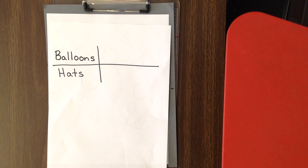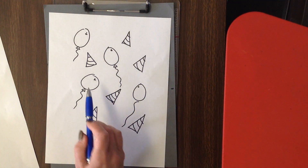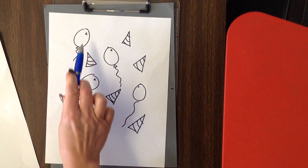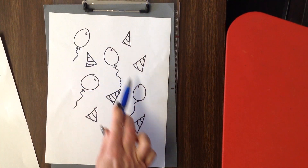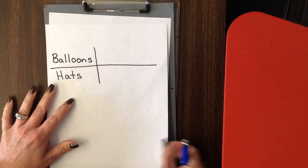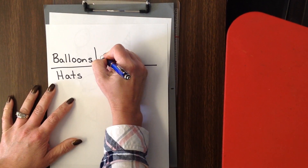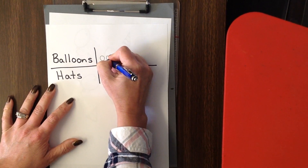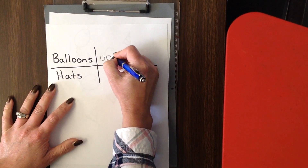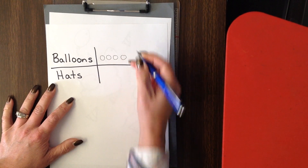Let's start first with counting each of them. Let's go back and look at the picture. We have one, two, three, four balloons. So I'm going to mark out one, two, three, four balloons.